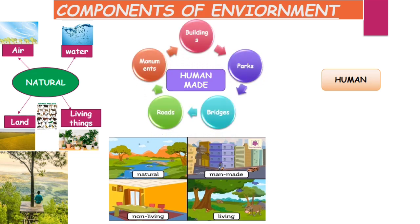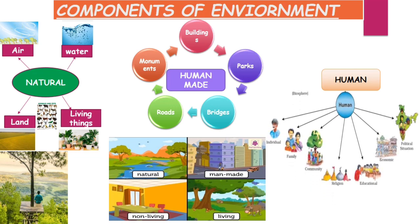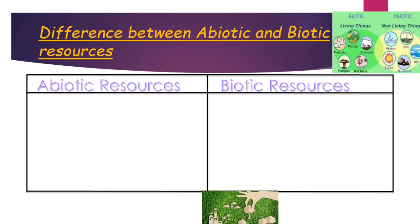Human-made components are objects created by humans, like buildings, parks, bridges, roads, and monuments. Human components — humans are also a component of environment. This includes individuals, family, community, religion, educational institutes, and the political and economic situation of a country or person. We will study all these components in depth later.